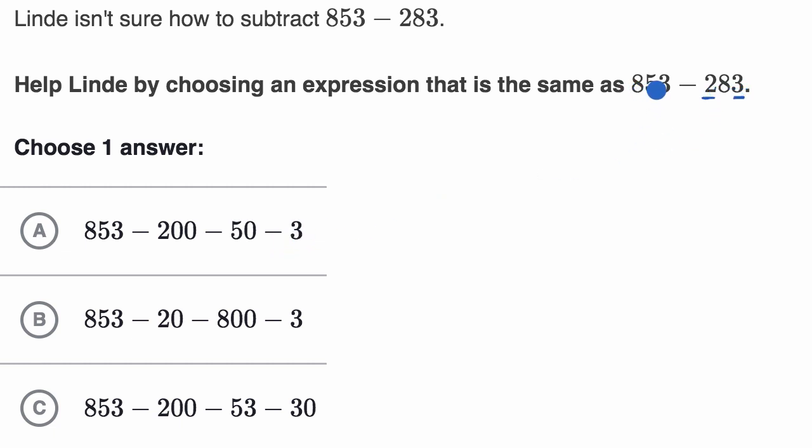You can view 853 minus 283 as 853 minus 200 minus 80, eight tens right here, minus 3. But that's not what they wrote over here. Instead of putting an 80 here, they put a 50. So we can rule that out.